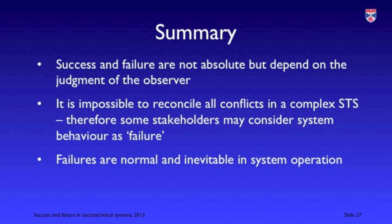In summary, success and failure are not absolute — they are not objective. They depend on the judgment of the observer or stakeholder. We can't resolve all conflicts in socio-technical systems, so there will always be some failures; some observers will see failures while others see successes. Failures are normal and inevitable, and one way to judge the seriousness of a failure is by asking how much extra work a user must do to recover and return the system to normal operation.